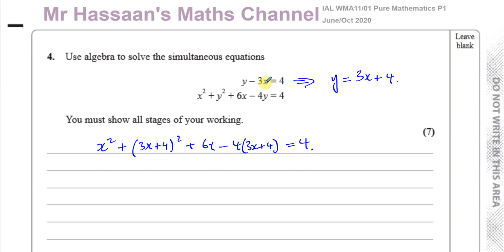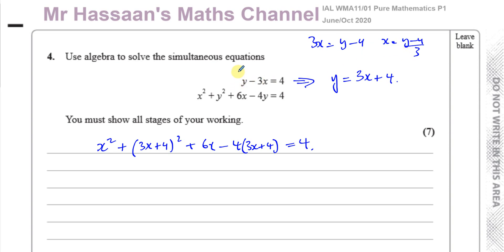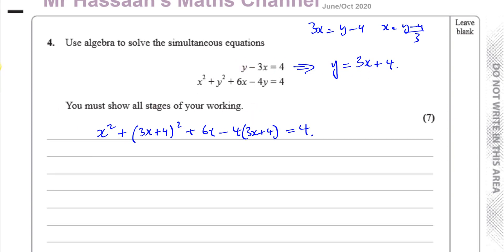I could have made x the subject instead. That would give 3x equals y minus 4, so x equals (y minus 4) over 3, and then substitute that into the second equation. But that's more hassle because you'd have to deal with fractions. So it's easier to choose the variable with a coefficient of 1, if it exists, make that the subject, and avoid fractions.